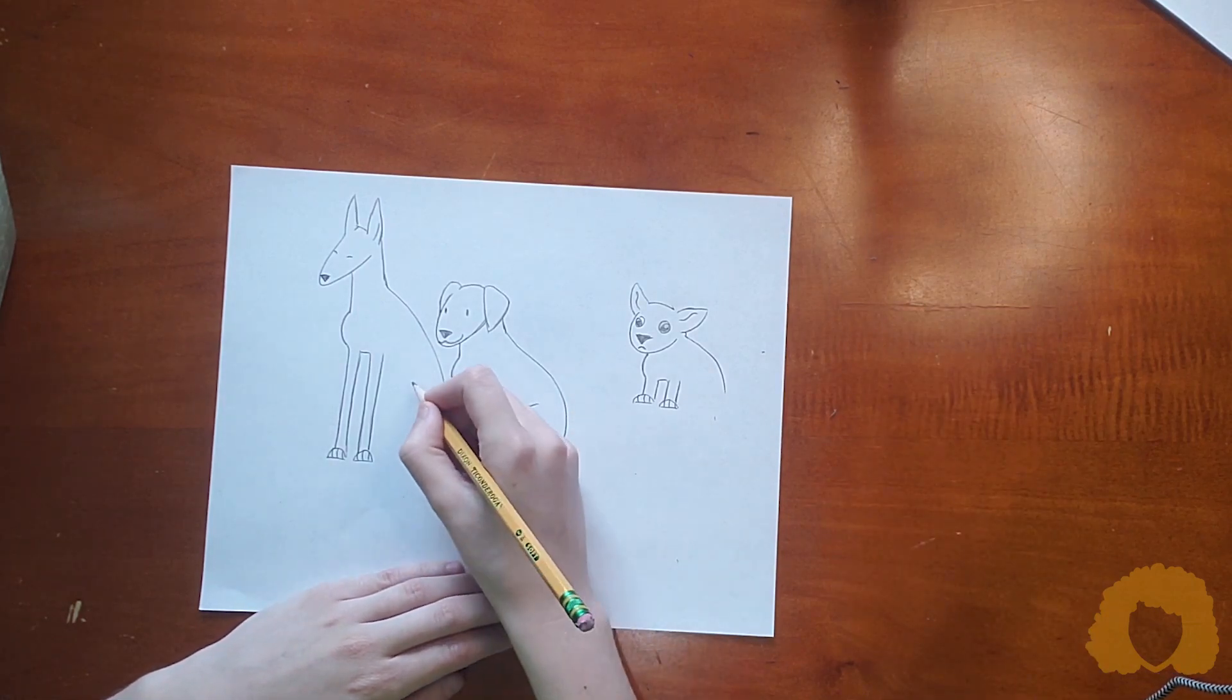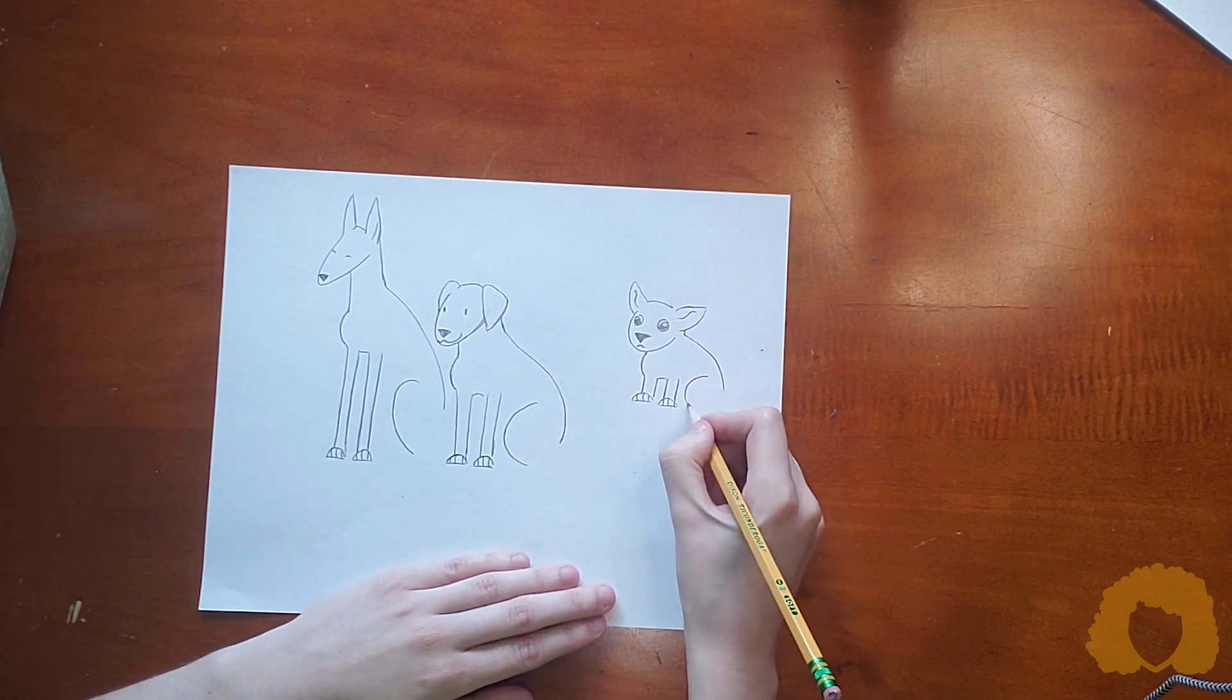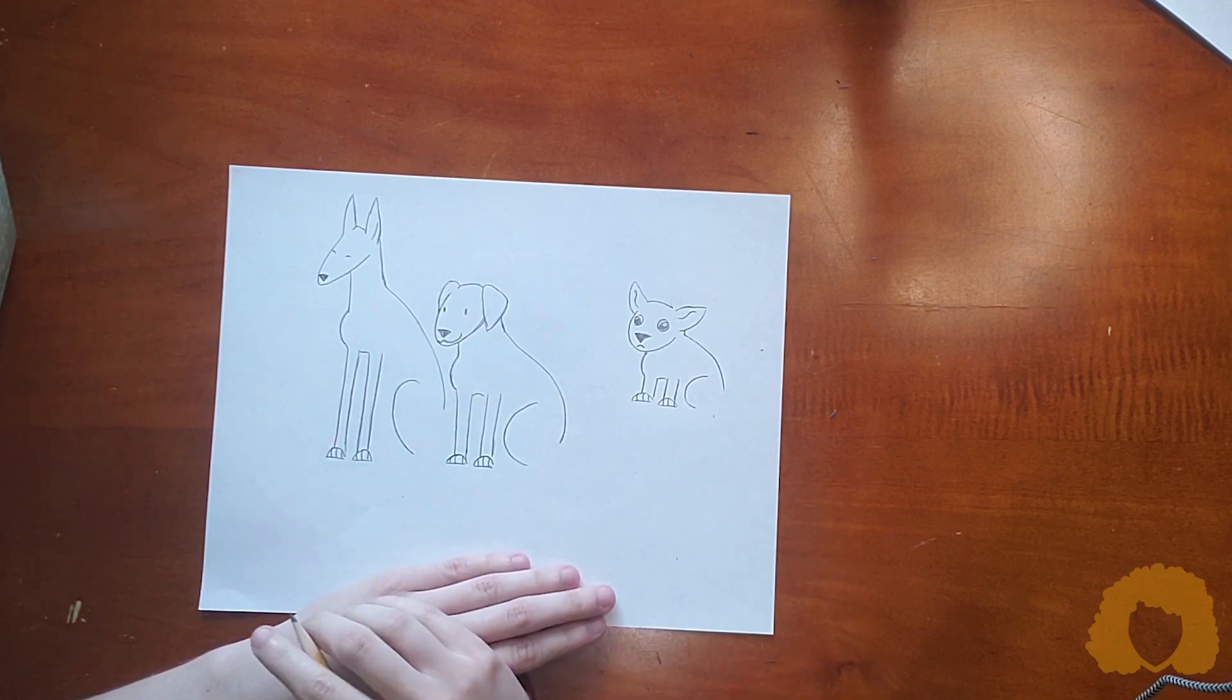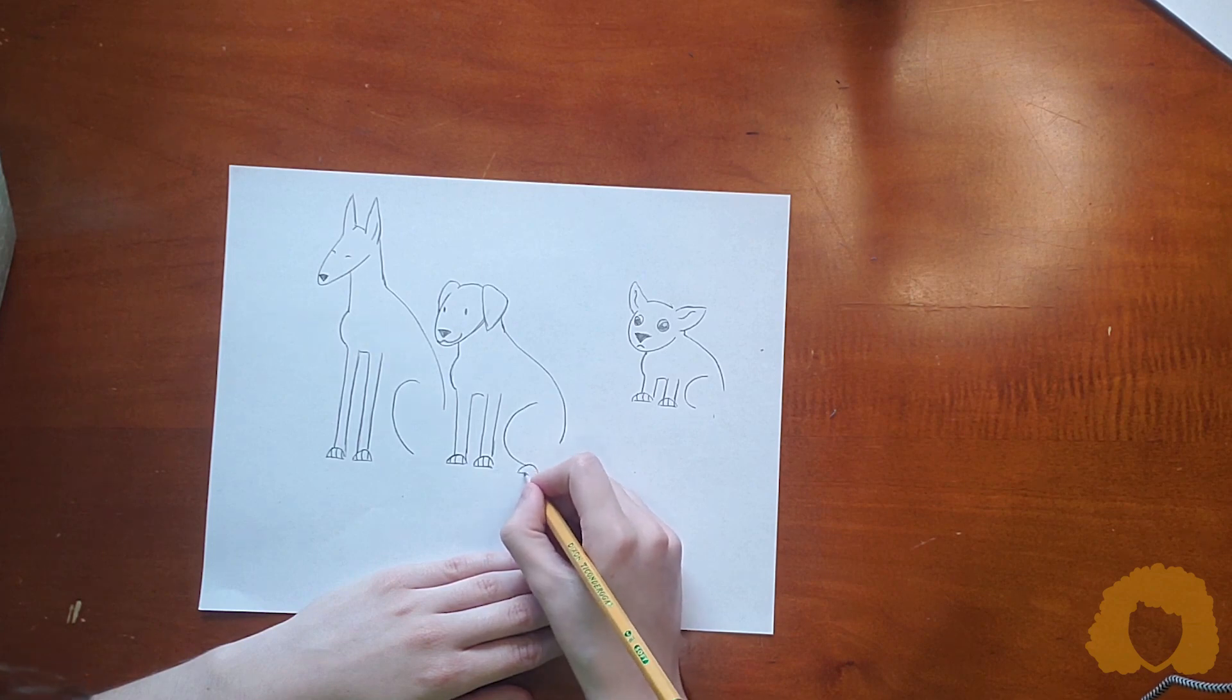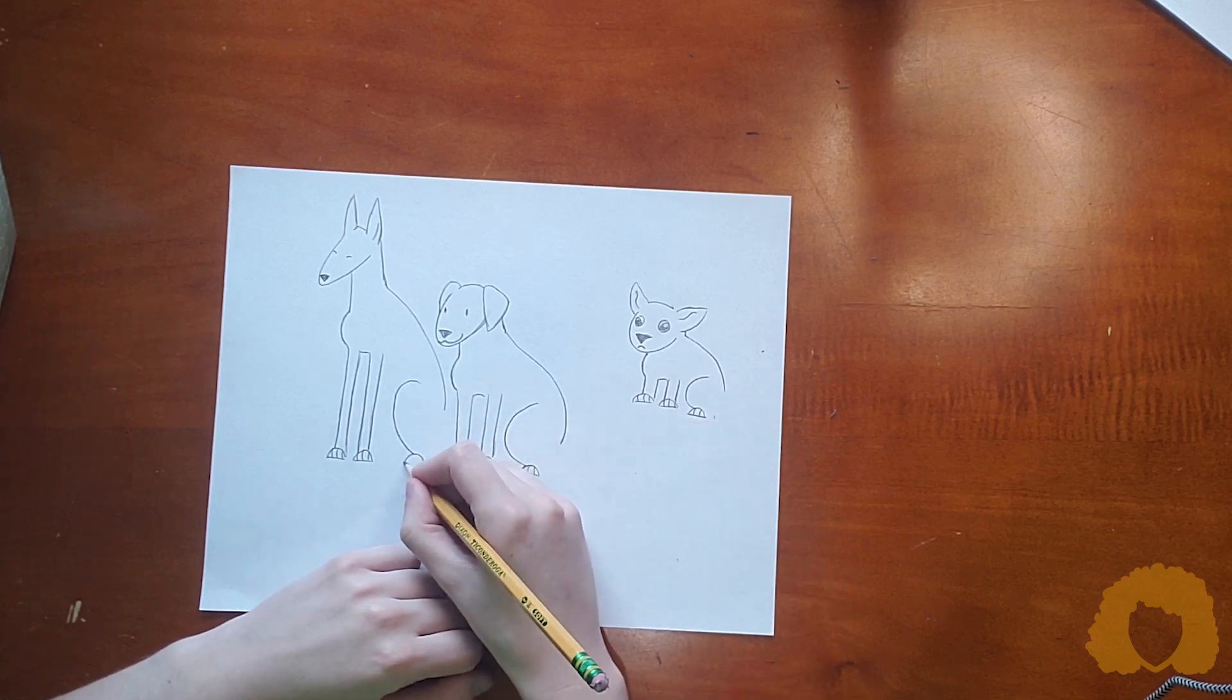And then draw a C for our hind legs, at least the beginning of our hind legs, with another half circle for the back paw.